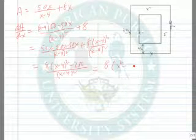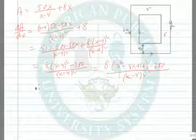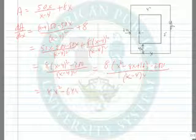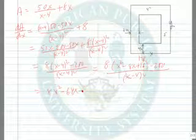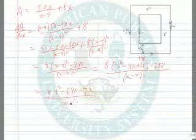So if we square the binomial, we're left with 8x squared minus 64x minus 72, all over (x minus 4) squared.